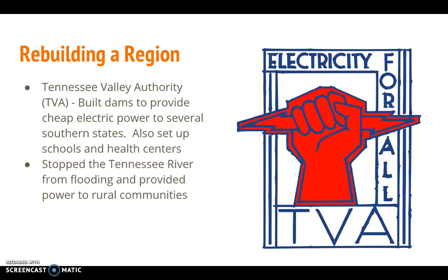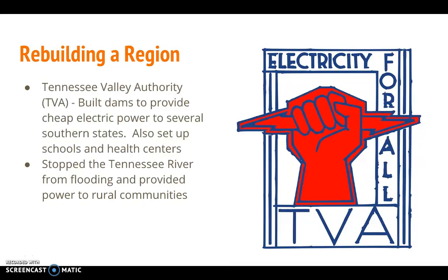One of the boldest programs of the hundred days was the Tennessee Valley Authority (TVA), which aimed to control flooding, promote conservation and development, and bring electricity to rural areas along the Tennessee River. By building new and improved dams, the TVA ended the region's disastrous floods and generated affordable hydroelectric power, wiring thousands of farms and homes in southern states for electricity for the first time. Some critics argued the funds should support nationwide programs, and power companies attacked it as unfair and communistic. But when spring rains came in 1937, the dams prevented flooding, and most observers agreed the TVA was a successful example of social and economic planning.